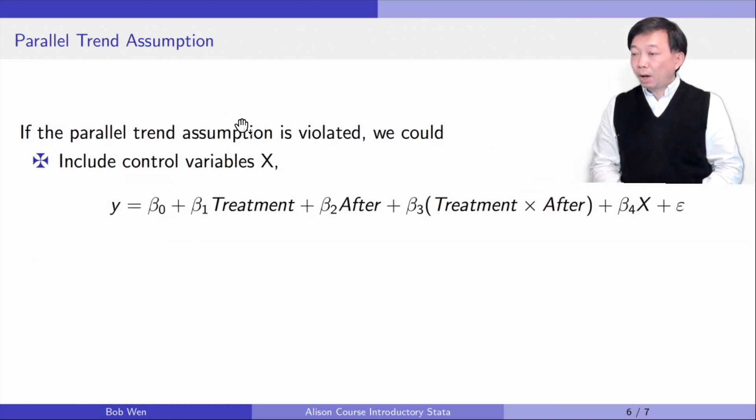What if the assumption is violated, i.e., the two groups are not similar? One solution is to include other observable explanatory variables as controls in the model. In this framework, the control variables account for the differences in the observable characteristics between the two groups that are not due to the treatment. We hope that after parceling out the effects of these control variables, the residual outcomes satisfy the parallel trend assumption. As a result, the estimates become more robust and causal.